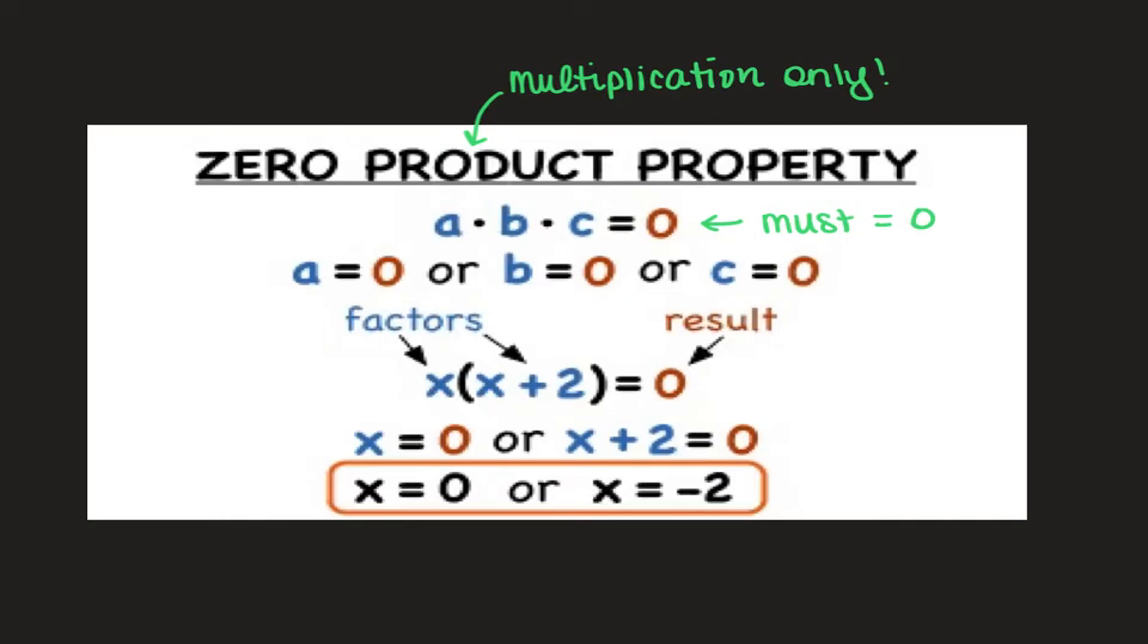When this happens, this means that any factor that's being multiplied to get this product of zero, each and every one of these has an opportunity to equal zero. So you would break it up and you would take your first factor equals zero, second equals zero. If you have a third, you set that equal to zero.